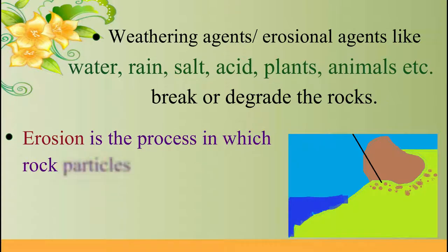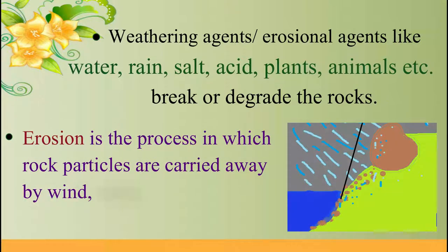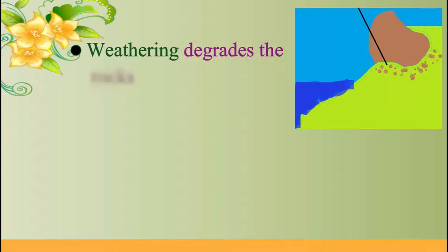Erosion is the process in which rock particles are carried when the wind, water, or ice takes them to another place. When broken rock particles are on their own place and are not displaced, then it is called weathering.